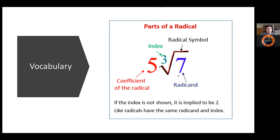Whatever is inside the radical symbol is called the radicand. For example, if you have the square root of 100, 81, or 25 — those numbers are all the radicands. Then we have the coefficient, which is no different than any other coefficient. Just like 5x or 10y where the 5 and 10 are the coefficients, here the number in front of the radical symbol is the coefficient being multiplied by the radical.